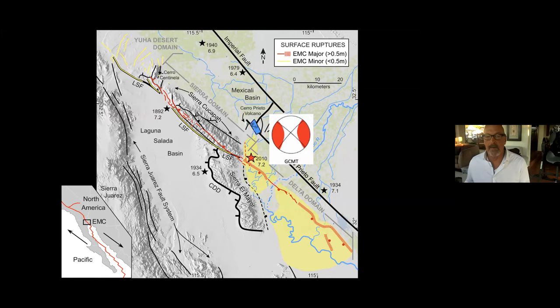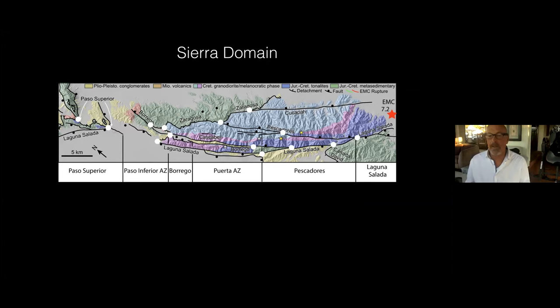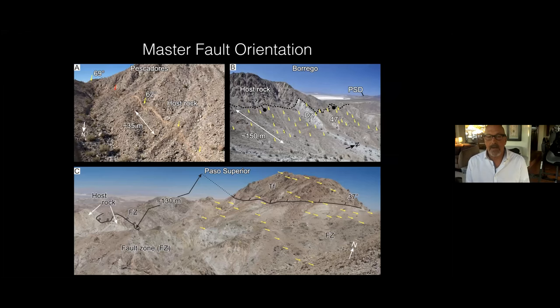Faults are best exposed in the Sierra Cucapah, and that's where we focused most of our structural studies. This is a map of the Sierra Cucapah, composed of Mesozoic crystalline basement, showing the complex fault network. The network is composed of faults that are short, discontinuous, and end at intersections with other faults. In order to make it through the complex network, the earthquake had to activate sections of almost every single individual fault. The geometric diversity is extreme: dips of the faults vary from sub-vertical to moderately dipping to very gently dipping, as low as 20 degrees, and strikes range in azimuth by 120 degrees.